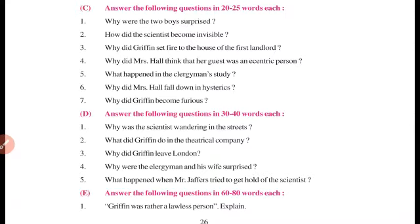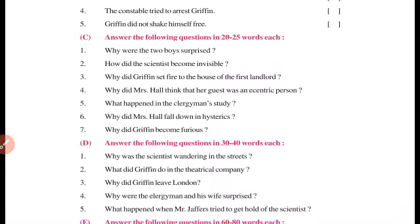Question number four: Why did Mrs. Hall think that her guest was an eccentric person? Mrs. Hall jo inn ka owner hai uski wife hai, woh aisa kyun sochti thi ki unka jo guest hai woh eccentric person hai? Because Mrs. Hall unse kaafi friendly behave kar rahi thi, par jo scientist tha Griffin, woh keh rahe the ki woh bilkul bhi disturbance nahi chahte. Isliye woh yahan Iping mein aaye hain gaon mein. Toh Mrs. Hall ne socha ki woh kaafi eccentric person hai — eccentric means kind of crazy, jiska behavior kaafi alag ho. So Mrs. Hall made every effort to be friendly but considered him an eccentric person.